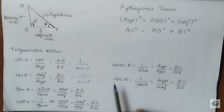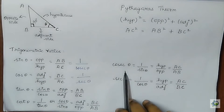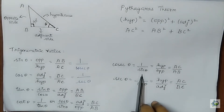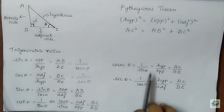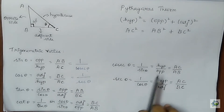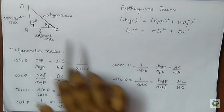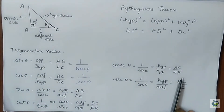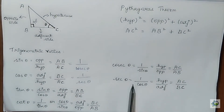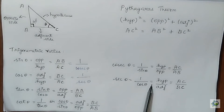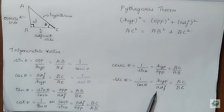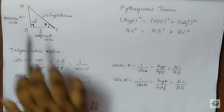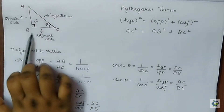Cosecant theta can be written as 1 by sin theta, which gives hypotenuse by opposite. The hypotenuse is AC and the opposite is AB, so cosecant theta equals AC by AB. Secant theta, which equals 1 by cos theta, can be written as hypotenuse by adjacent, giving AC by BC.